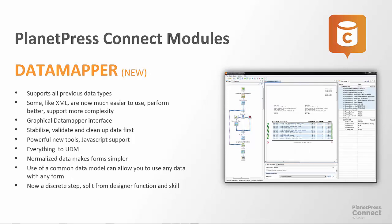Next up is our new data mapper. This exciting new tool is a great graphical interface that allows us to take all the types of data we've worked with in the past — and some new ones — and convert it to a unified data model, a UDM, essentially a database under the covers with a very consistent look and feel. So when all these different data types reach the forms design stage, they all look the same and they all behave the same, making forms design an easier place to be. There's a wide range of additional tools and capabilities within the data mapper to make sure we're getting all the information that we want, skipping over information we don't, and correctly identifying detail lines or information that only appears once in the data stream like the address.